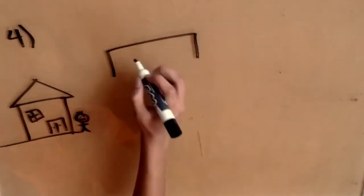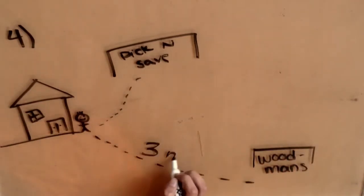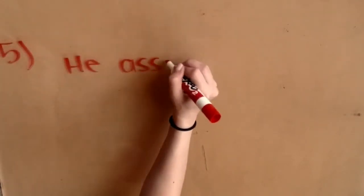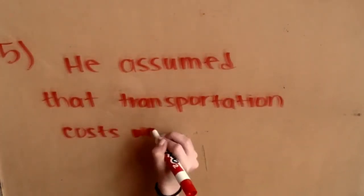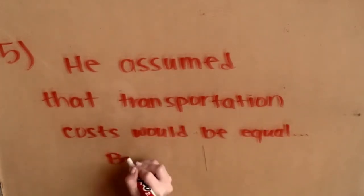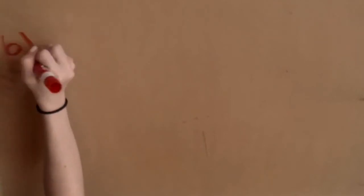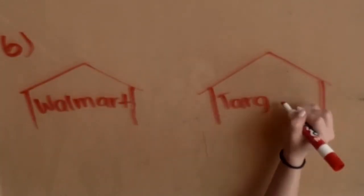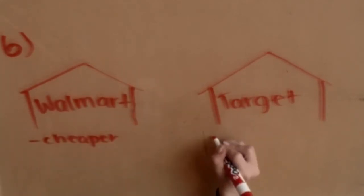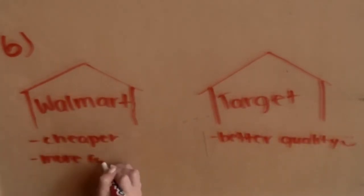His fourth assumption was that consumers would go to the nearest market, which is also not the case because I would go to Woodman's instead of Pick and Save. He also assumed that transportation costs were the same, but it's not. Last but not least, he assumed that there would be perfect competition, so Walmart and Target would actually be the same thing.